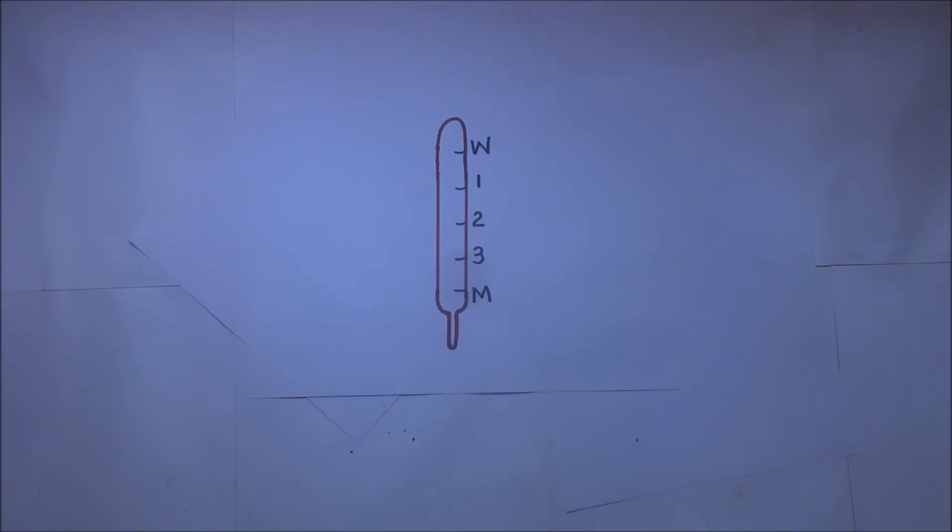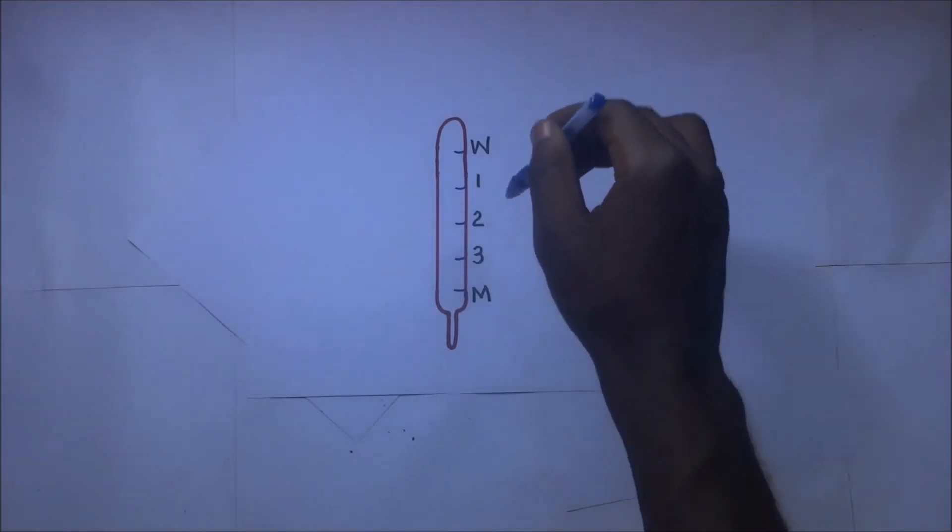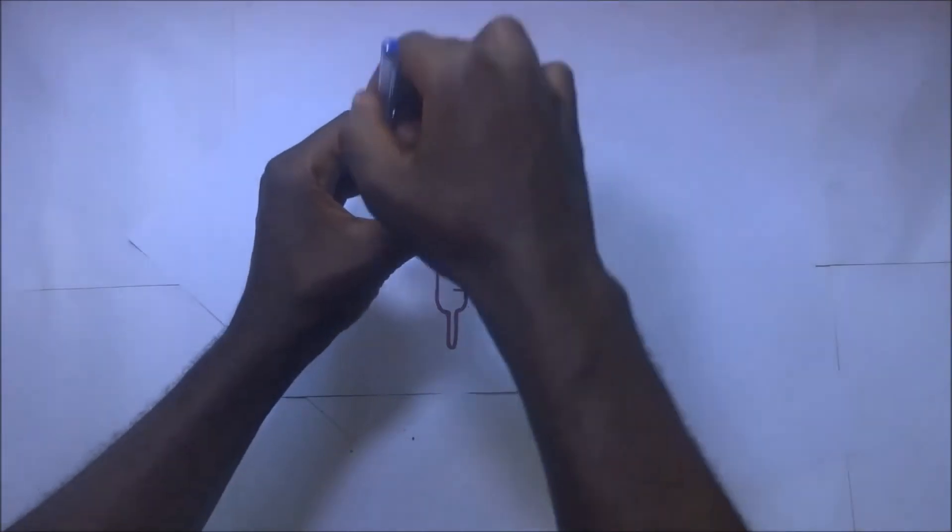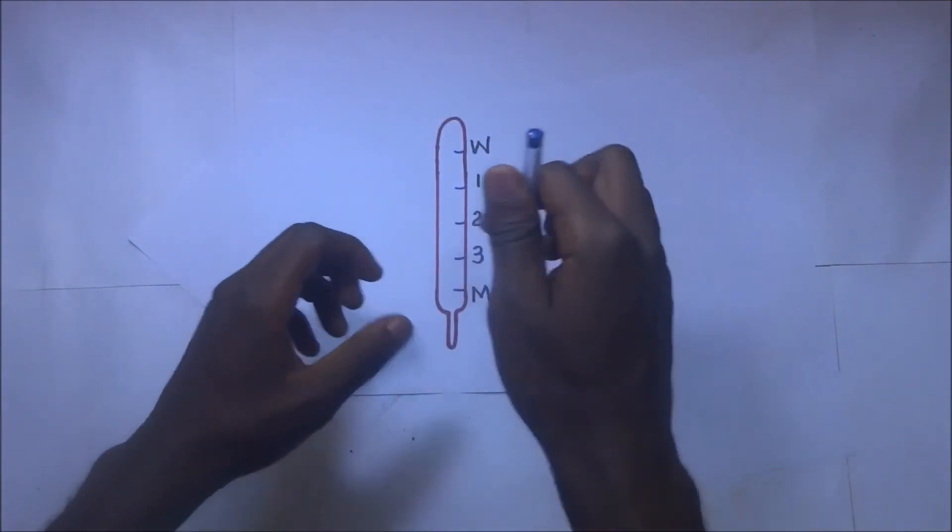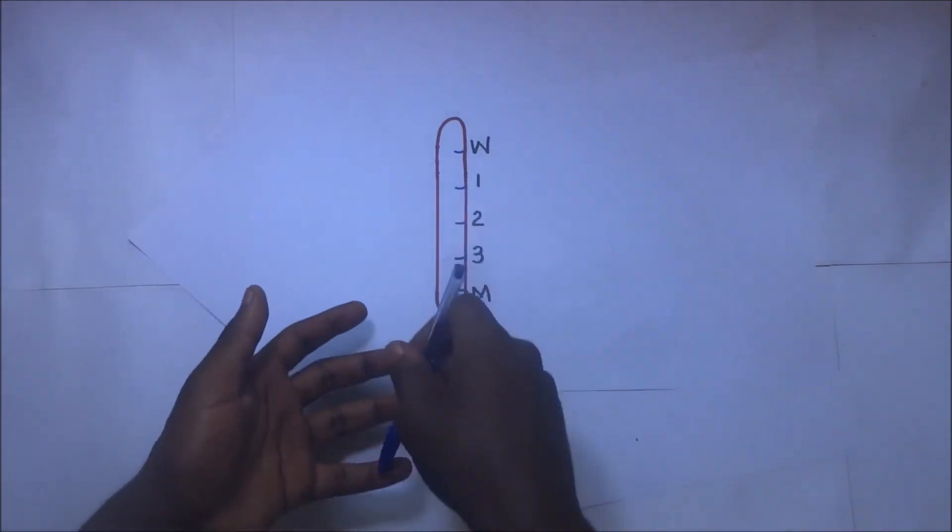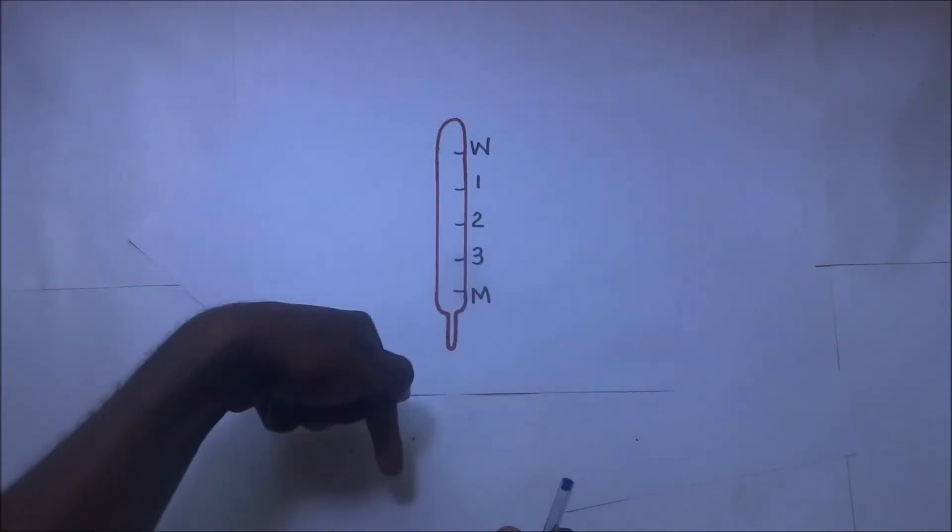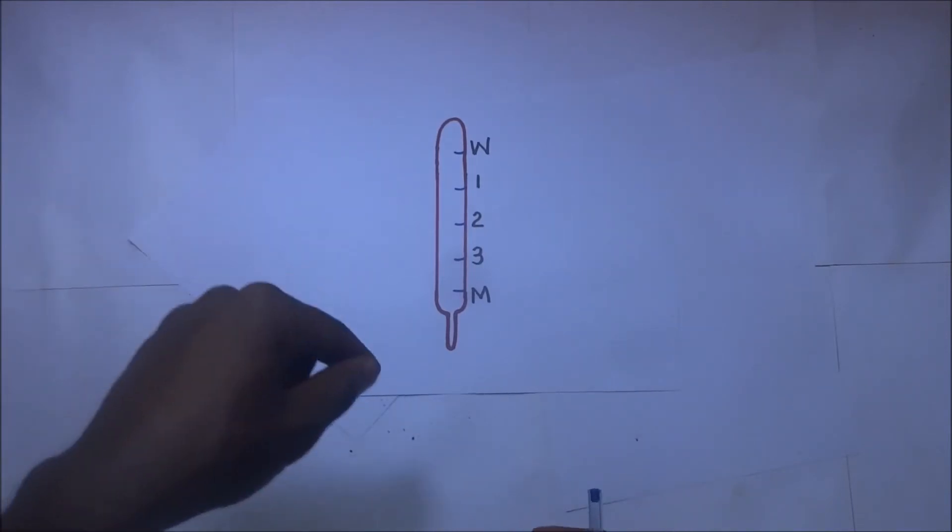Adding water to milk decreases the density of milk. If I drop this thing in milk and the more I add water, the less the density, the deeper it sinks. With this lactometer, the deeper it sinks, the more water that has been added to the milk.